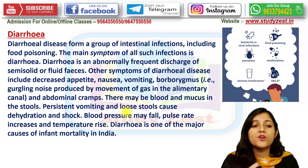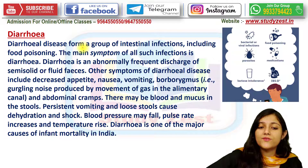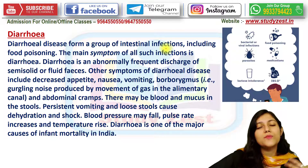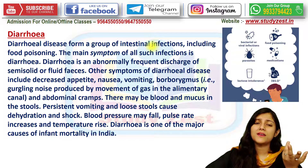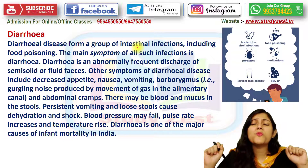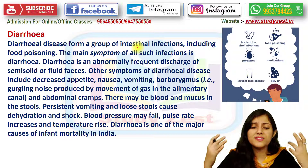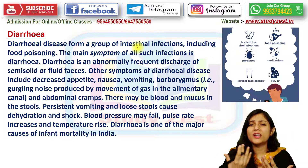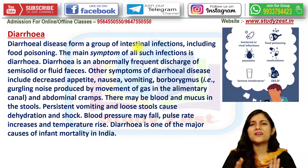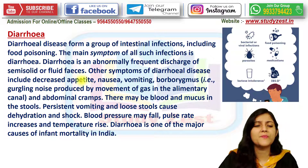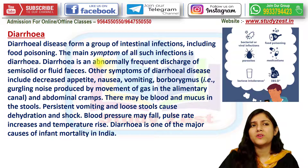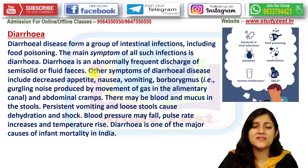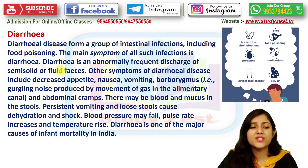Moving on to the next disease: diarrhea. Diarrheal diseases form a group of intestinal infections. This is also a very dangerous infection, which generally causes food poisoning. The body becomes very weak, appetite decreases, and there is continuous trouble with stool passage. The main symptom of all such infections is diarrhea.